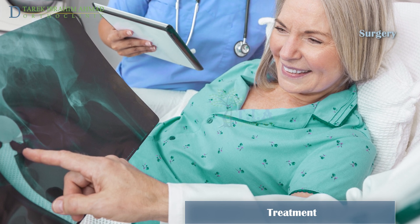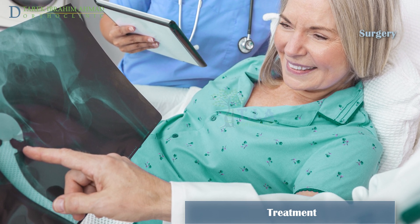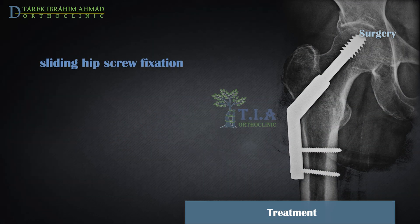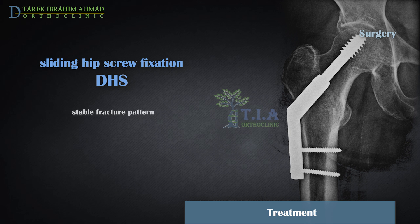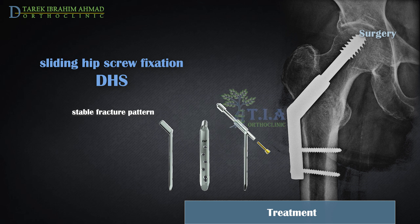There are many options available for internal fixation of intertrochanteric fractures, such as the dynamic hip screw (DHS). This surgical method is employed for stable fractures and involves repositioning the broken bones into their normal position, followed by fixation utilizing a sliding hip screw coupled to a side metal plate that is screwed to the femoral shaft.